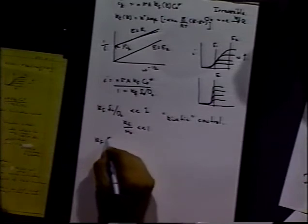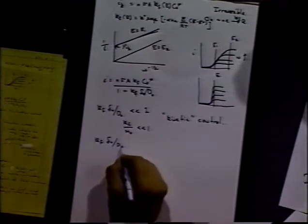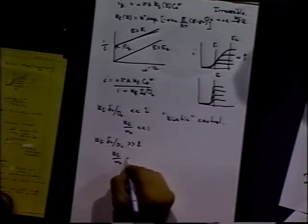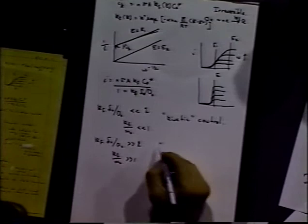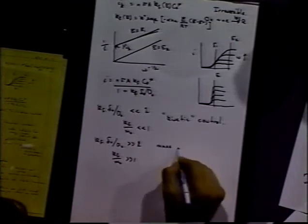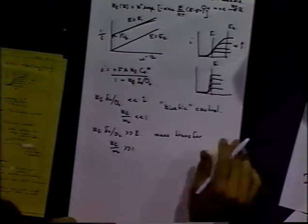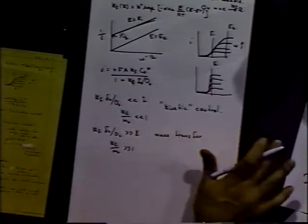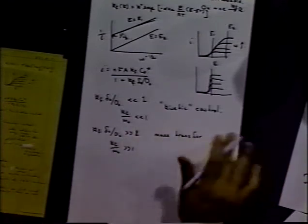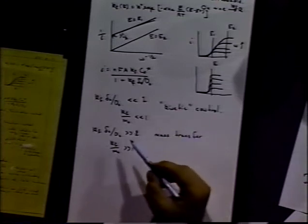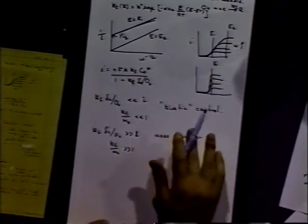If, on the other hand, kf delta zero over d zero is much greater than one—in other words, kf over the mass transfer coefficient is greater than one—we're in mass transfer control. And we have no hope of getting kinetic information out of our experiment. This holds for all cases of steady state situations. Anytime we can write down a mass transfer coefficient, this holds for every particular case.